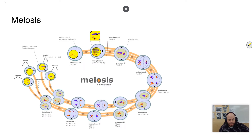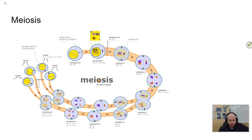Meiosis is the process of making haploid cells — also called sex cells or gametes — and this happens in sexually reproducing organisms. Those organisms start out as diploid, and they create haploid cells.